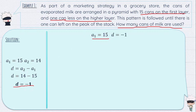Now listing the given values needed for the arithmetic series formula: a sub 1 equals 15, d equals negative 1, and n equals 15. The reason n equals 15 is that counting down from 15 cans to 1 can — 15, 14, 13, 12, 11, 10, 9, 8, 7, 6, 5, 4, 3, 2, 1 — gives us 15 layers total. So we have a 15-layered pyramid, and that is why n equals 15.